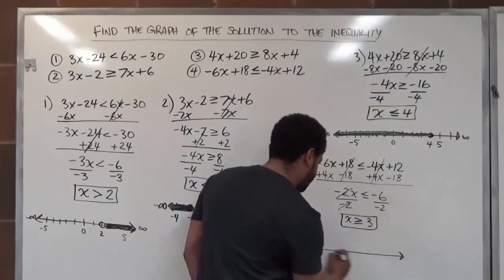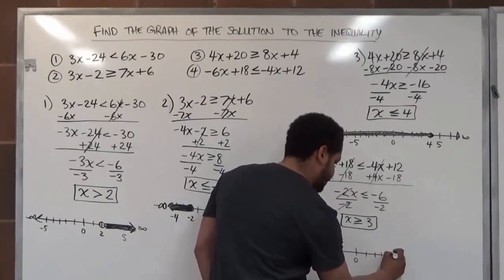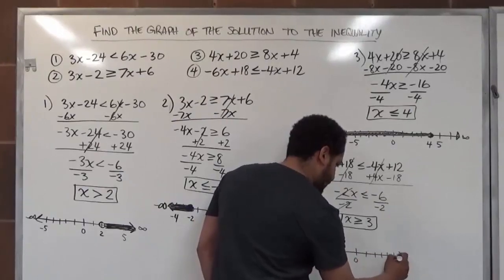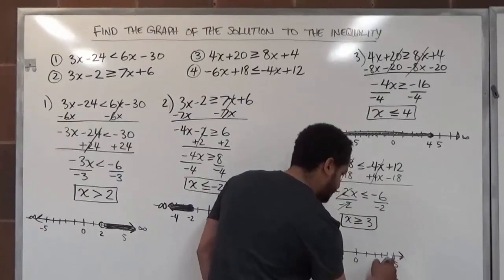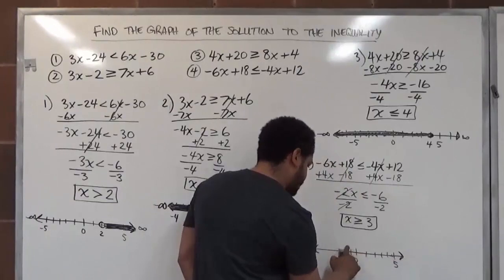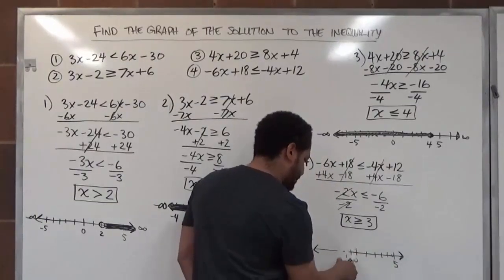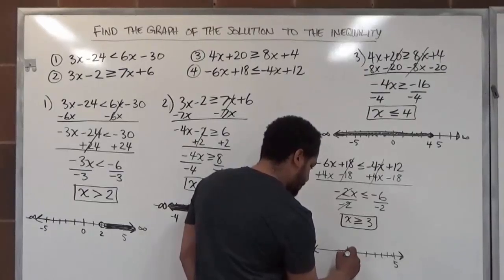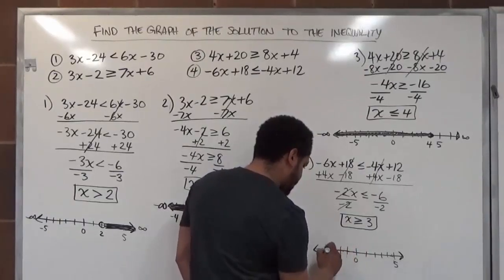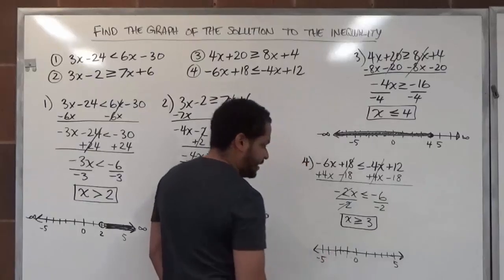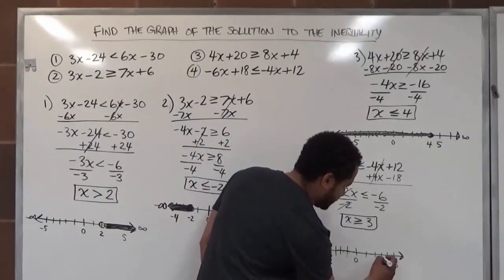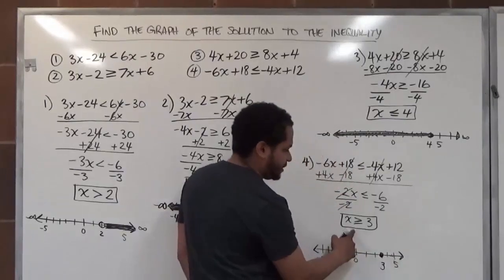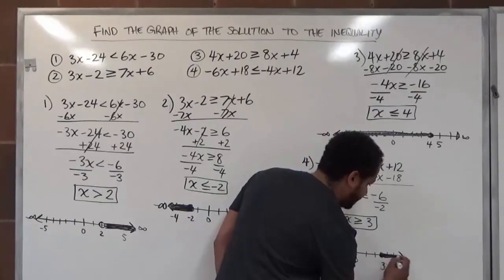I just need to graph this inequality. I draw my number line with zero in the middle and tick marks at 1, 2, 3, 4, 5 and negative 1 through negative 5. The solution is x greater than or equal to 3, so three is the first value. It's a solid dot because it has equality, and we shade everything to the right of three going to infinity.